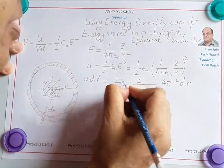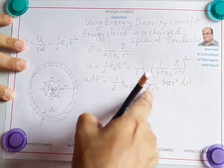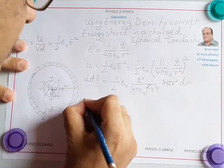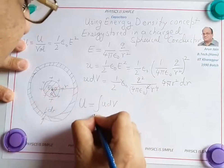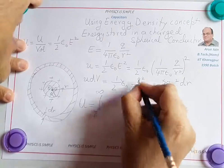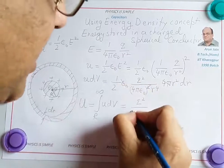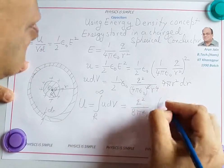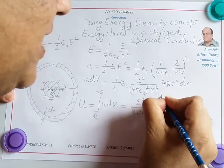The 4 pi epsilon naught terms cancel with the 1 over 4 pi epsilon naught, leaving 1 over r squared. The total potential energy is the integration of u dv from the surface radius R to infinity, which becomes q squared over 8 pi epsilon naught times the integral of 1 over r squared dr from R to infinity.